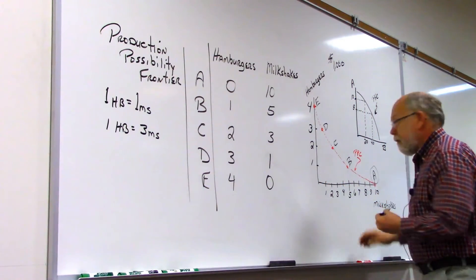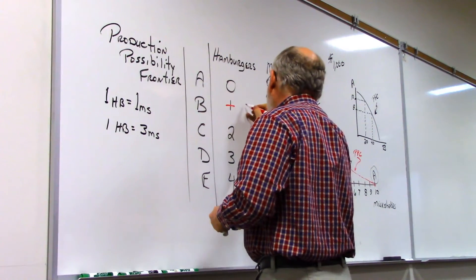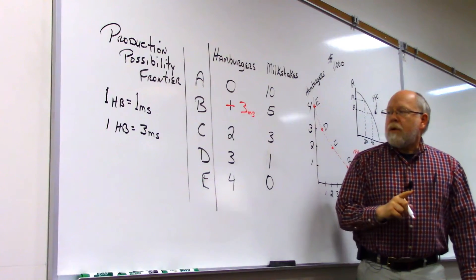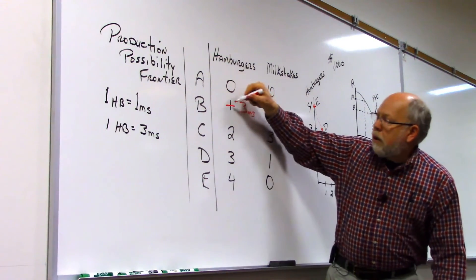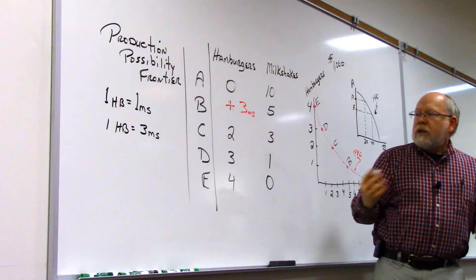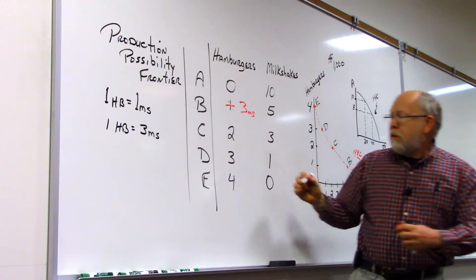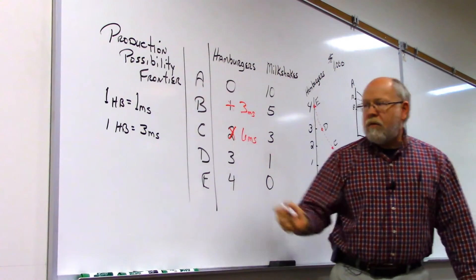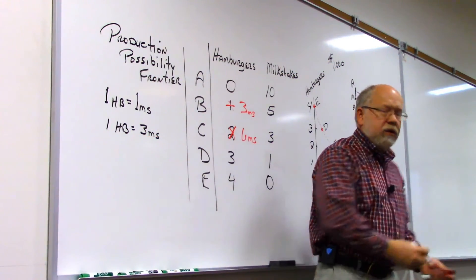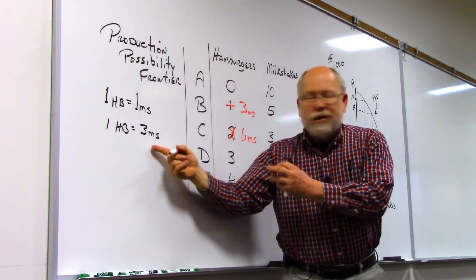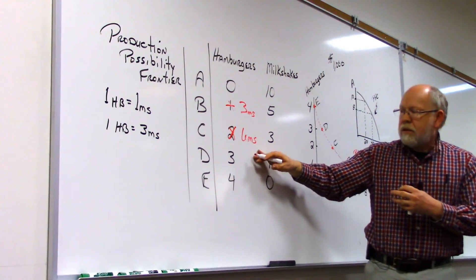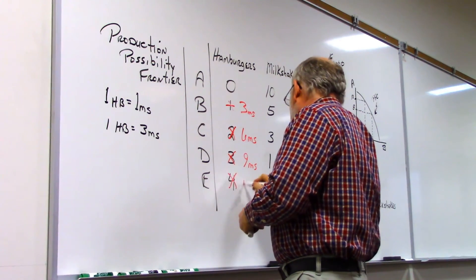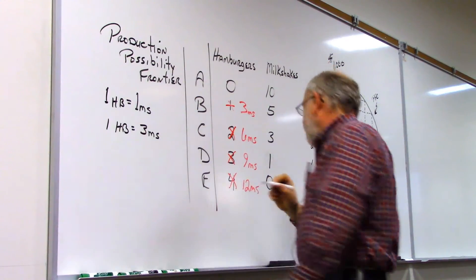Let me do this in red. So that would be three milkshakes. And if we made two hamburgers, I'll just put a little x through that. If we made two hamburgers, we could exchange that for six milkshakes. Why? Because if we've got one hamburger, we exchange that for three milkshakes. We make another hamburger, we exchange that for another three milkshakes, and we come up with six. Similarly, this would be nine milkshakes, and this would be 12 milkshakes.